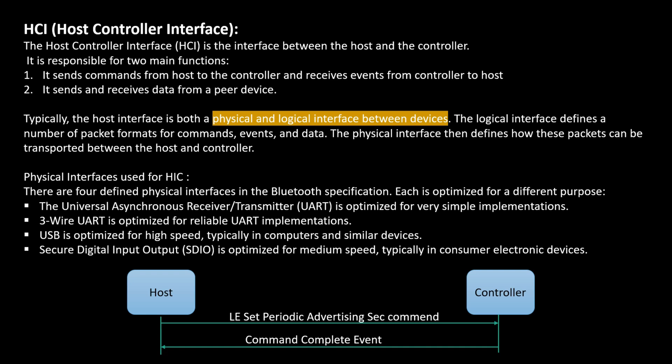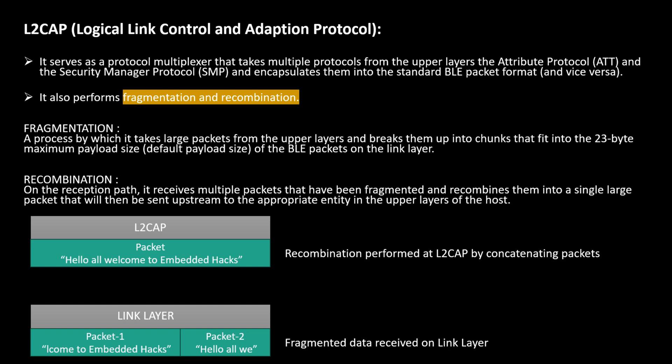The next layer is L2CAP — Logical Link Control and Adaptation Protocol. This layer acts as a protocol multiplexer that takes multiple protocols from the upper layers (the Attribute Protocol and the Security Manager Protocol) and encapsulates them into a standard BLE packet format. It also performs fragmentation and recombination. The term 'protocol' in L2CAP refers to a standard packet defined by BLE that is useful for interoperability — for example, if your host is from TI and your controller is from ESP32, a standard L2CAP packet ensures the controller can decode the data correctly.